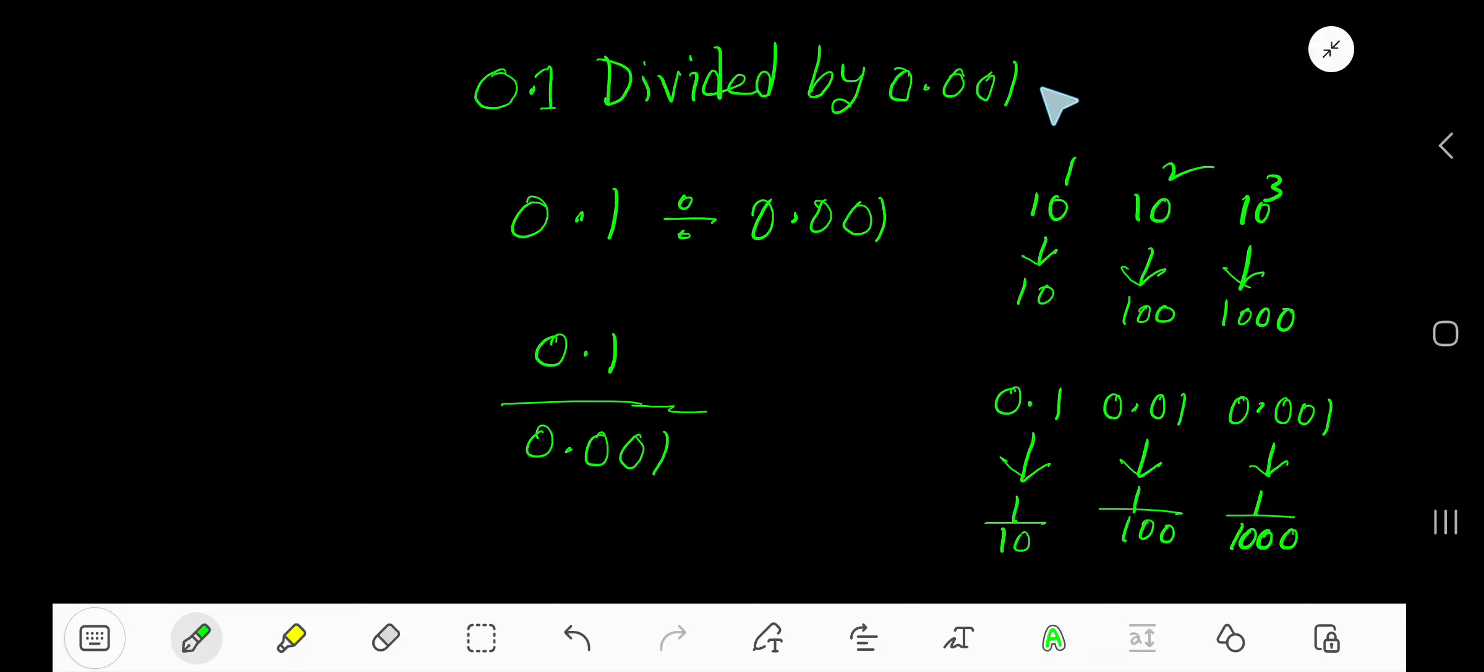0.1 divided by 0.001. So what will you do? Look here, the divisor or the denominator is a power of 10. Look, 10, 100, 1000 is a power of 10, but these are greater than 1. But 0.1, 0.01, 0.001, these...